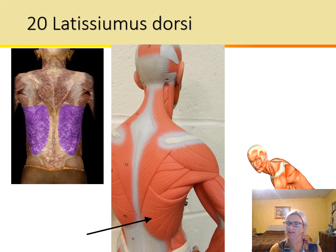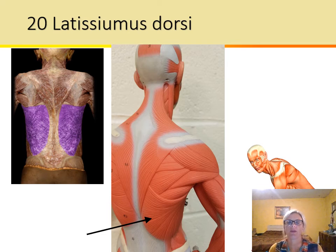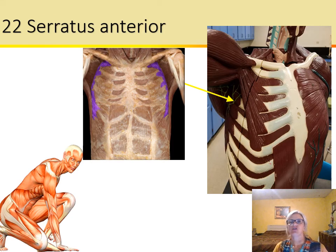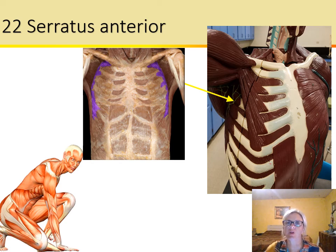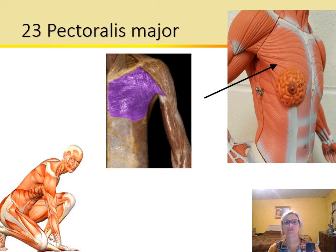Latissimus dorsi means 'very wide back' — these are wide, lengthwise muscles on the sides of the back that help with adduction, extension, and rotation of the arm. The levator scapulae basically means 'scapula lifter' — it elevates the scapula. The serratus anterior — serratus refers to sawtooth, and anterior is the front — these front sawtooth-shaped muscles draw the scapula forward, and the inferior fibers rotate the scapula superiorly.